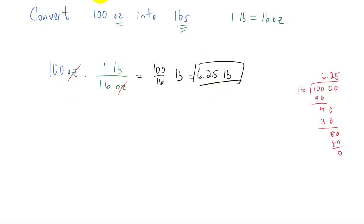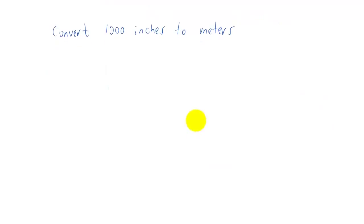All right, these conversions can get complicated in a couple of different ways. Let me show you one way it can become a little bit more complicated. What if we wanted to convert 1,000 inches into meters? Well, I'm looking at my list of conversions here, and I don't see any relationship directly between inches and meters. So what we need to do is we need to come up with a plan. I see a relationship between inches and feet, and I see a relationship between feet and meters. So what we can do is we can go from inches to feet to meters. That actually involves two conversions.